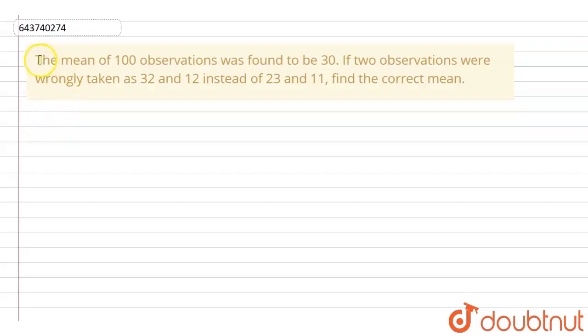In this question, we are given that the mean of 100 observations was found to be 30. If two observations were wrongly taken as 32 and 12 instead of 23 and 11, we have to find the correct mean.